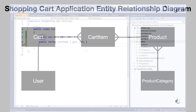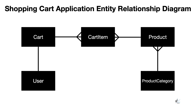Looking at the entity-relationship diagram, we can see the relationships between our entities. The Cart entity has a one-to-many relationship with the CartItem entity. The Product entity has a one-to-many relationship with the CartItem entity. The ProductCategory entity has a one-to-many relationship with the Product entity. The User entity has a one-to-one relationship with the Cart entity, meaning each user can only have one shopping cart.